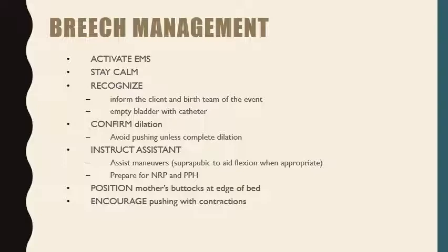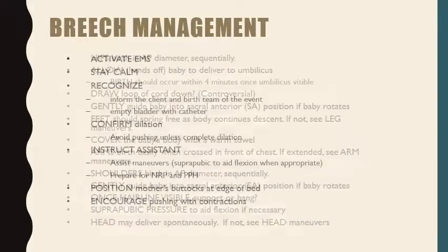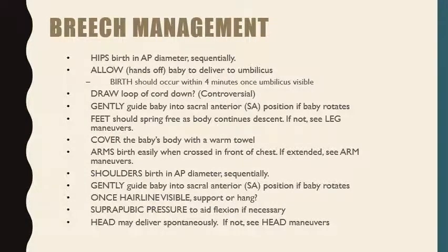Because we're rarely going to deliver a breech vaginally unless it's a surprise, the goal is to remember one reliable approach. If the baby's coming, encourage pushing with contractions. Usually after the buttocks, the hips are going to birth in an anterior-posterior diameter sequentially — one side of the hip, then the other. We're going to stay hands off if we can, only going hands on if there is an arrest in descent, so that we don't cause extension. We want the baby to remain well flexed.